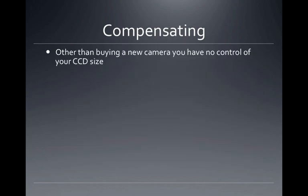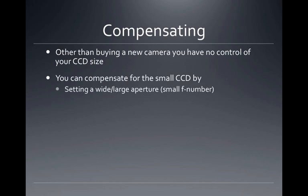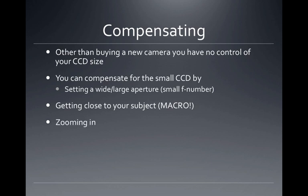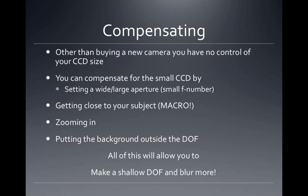So compensating for the small CCD — other than buying a new camera — you can set a wide or large aperture, meaning a small f-number. Or get close to your subject, including macro. And zoom in. You can also space your subject so the background is outside the range of the depth of field. All of this will allow you to create a shallow depth of field and blur more — for artistic reasons, that's how you can do it.